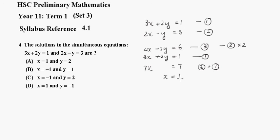Now you can put that value of 1 back into either equation 1 or 2. I'll substitute into equation 1. We get 3 times 1, which is 3, plus 2y equals 1. So 3 + 2y = 1.